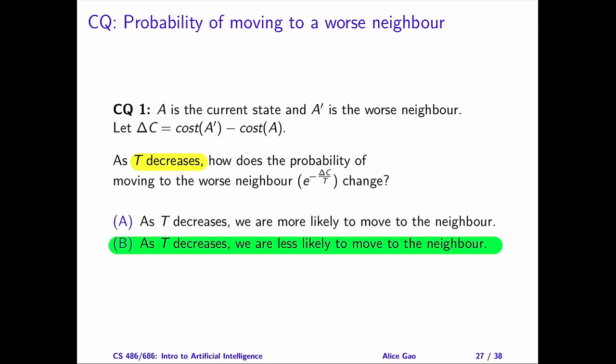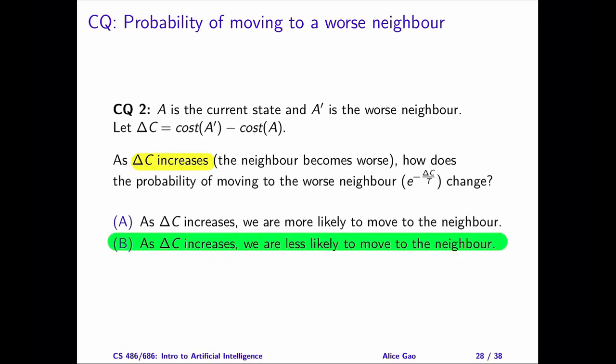The correct answer to question 1 is B. As the temperature decreases, the probability of moving to a worse neighbor decreases. The correct answer to question number 2 is B as well. As the cost difference delta C increases, the probability of moving to a worse neighbor decreases.